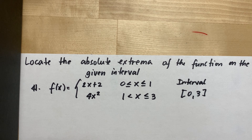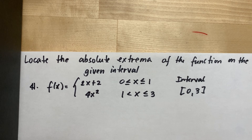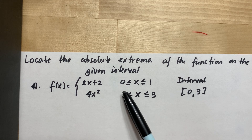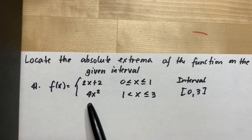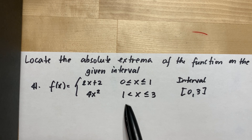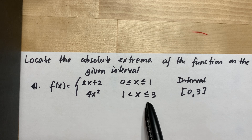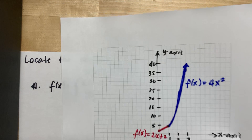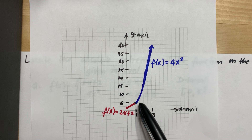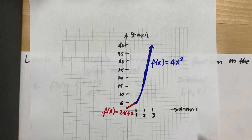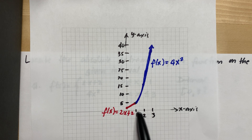Locate the absolute extrema of the function on the given interval. For number 41, we have f(x) equal to 2x plus 2 from 0 to 1, meaning the graph goes from 0 up to 1, and 4x squared from 1 to 3, meaning the graph goes from 1 to 3. This is the graph of 2x plus 2 and the parabola for 4x squared, going from 0 to 1 and 1 to 3.